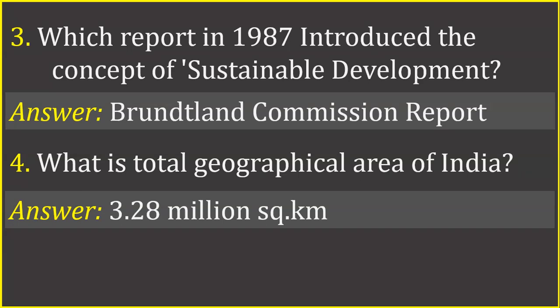What is the total geographical area of India? Answer: 3.28 million square kilometers.